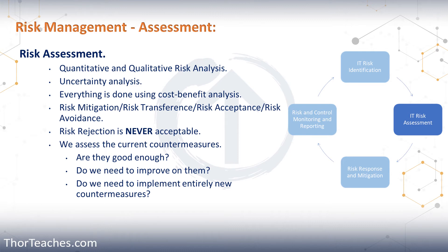And then finally, we have risk rejection. This is never okay, ever. This is us knowing that the risk is there but just ignoring it. Never okay. Our risk response should always be based on analysis, and it should be one of the four other categories.